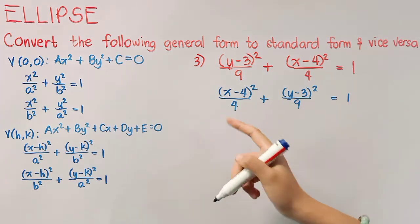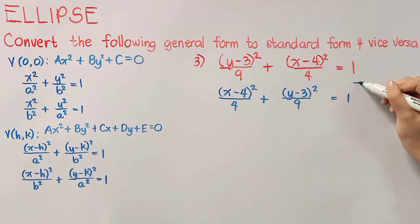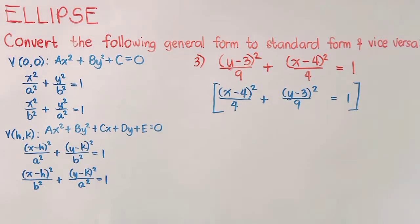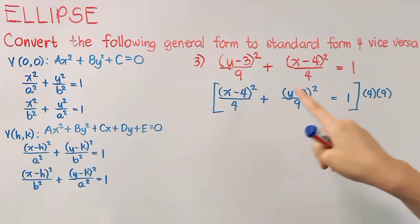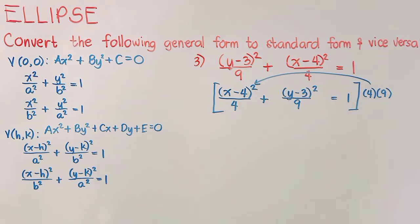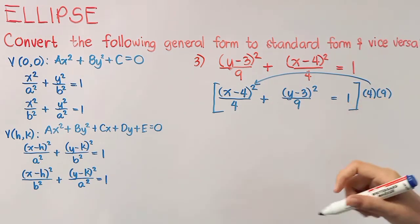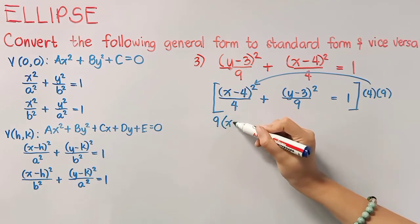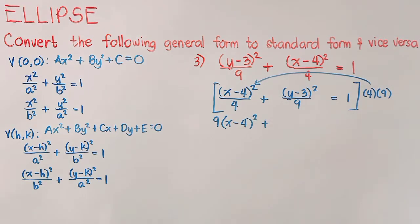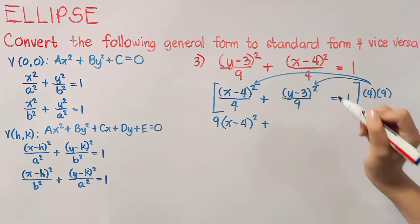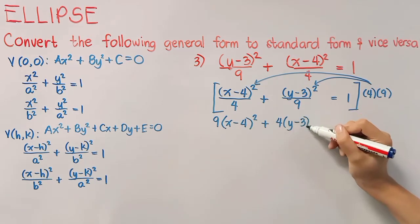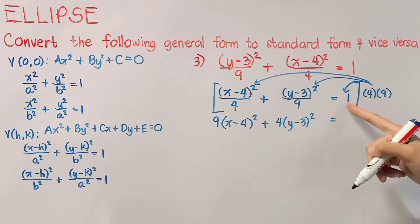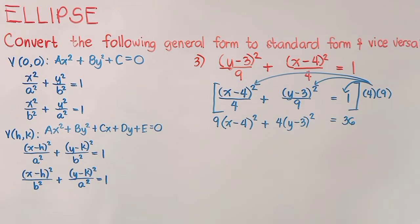Our first step is to eliminate fractions by finding the LCD or least common denominator. Since there is no number that can divide both 4 and 9, our LCD is simply the product of 4 times 9. We will distribute this to each term. Starting with the first term, since 4 is common here, we cancel it out and are left with 9, multiplied to the numerator. On the second term, 9 is common, so we cancel it out and 4 is multiplied to the numerator. Lastly, 1 times 4 times 9 is equal to 36. As you can see, there is no more fraction here and we can now proceed.